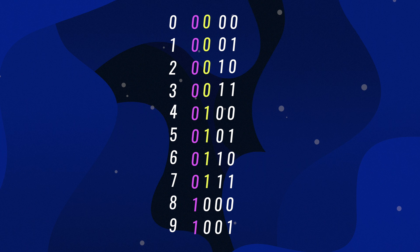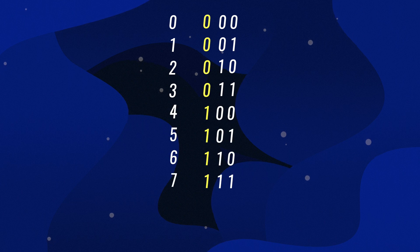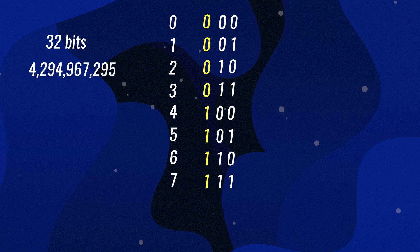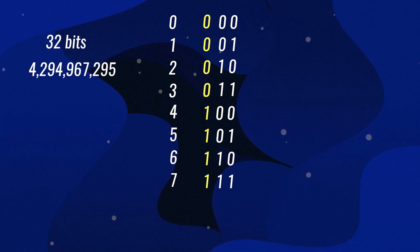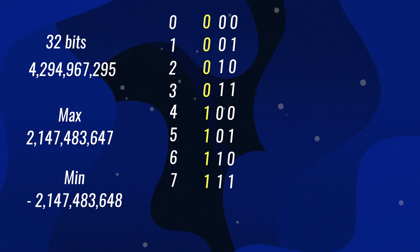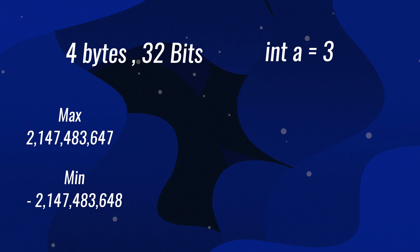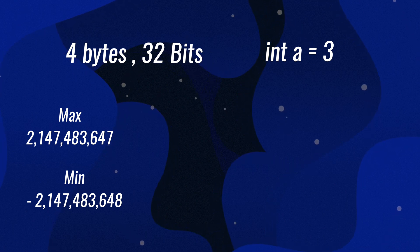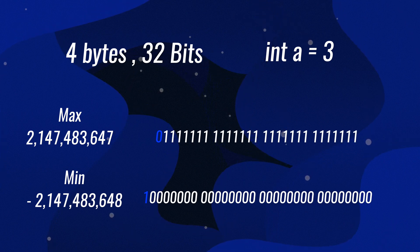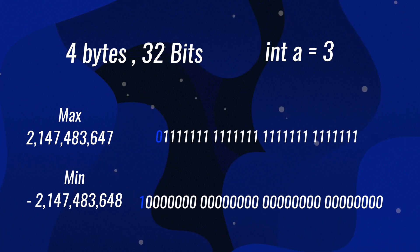The number of bits determines the maximum and the minimum number you can count to. With two bits, you can only count to about three. With three bits, you can count to about seven, and with 32 bits, which is the size of the integer, you can count to about 4.2 billion. However, computers use two's complement, which uses the first bit to indicate the sign of the number, so you can only count to a max of about 2.1 billion and a minimum of about negative 2.1 billion. The first bit shows whether the number is positive or negative — zero means positive, one means negative.